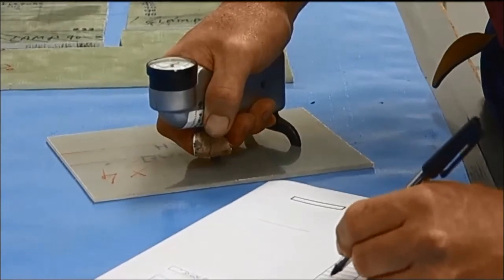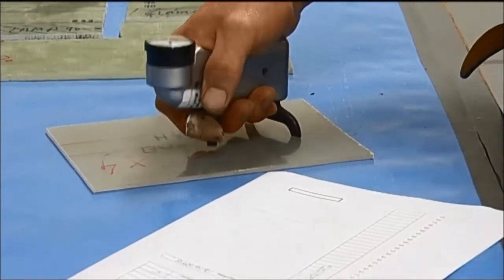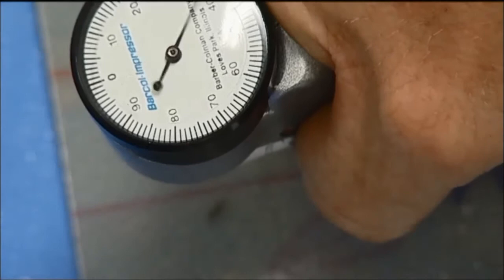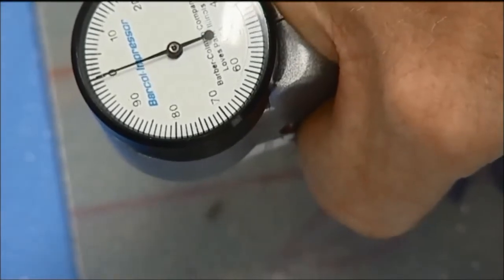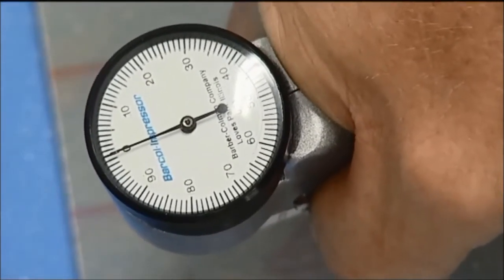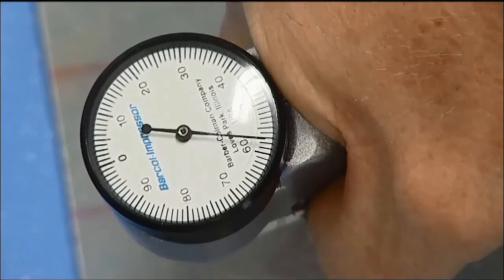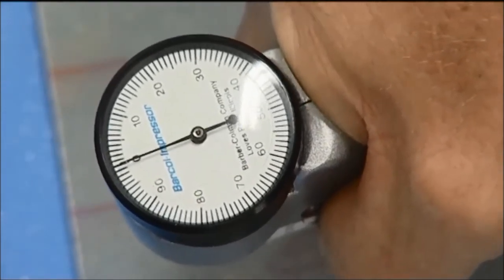The specimens are required to be a minimum thickness of one-sixteenth of an inch. They are placed under the indenter of the Barcol Hardness Tester and a uniform pressure is applied to the specimen until the dial indication reaches a maximum.